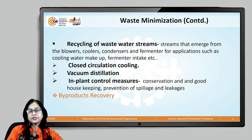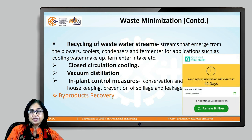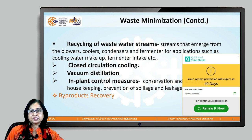Vacuum distillation is also favored: by carrying out distillation under vacuum, the temperature required for boiling is reduced drastically. In-plant control measures such as conservation and recycling of water, good housekeeping, and prevention of spillage and leakage are also important steps. The last step in this process is byproduct recovery.